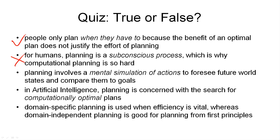The third statement — planning involves a mental simulation of actions to foresee future world states and compare them to goals — is true. The fourth statement — in artificial intelligence, planning is concerned with a search for computationally optimal plans — is false. We're not only after optimal plans; we also want to sometimes find out whether a plan exists at all, whether it's optimal or not. Finally, the fifth statement — domain specific planning is used when efficiency is vital, whereas domain independent planning is good for planning from first principles — is true again.